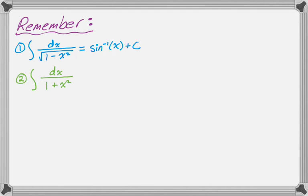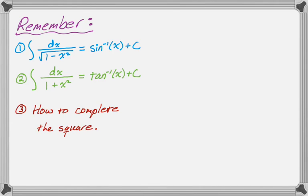Similarly, the integral of dx over 1 plus x squared is going to give you arc tan of x plus c. And the third thing you really need to remember, which is kind of a big deal, is you have to remember how to complete the square.